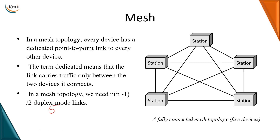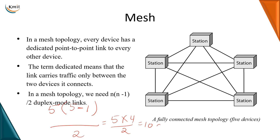If I have five devices, the number of duplex links will be 5 into 5 minus 1 by 2. That comes to 5 into 4 divided by 2, which equals 10 duplex links. It means that we will require 10 duplex links to connect five devices in a mesh topology.